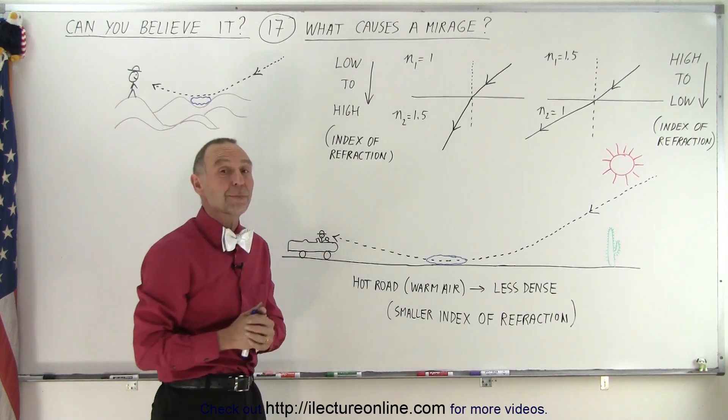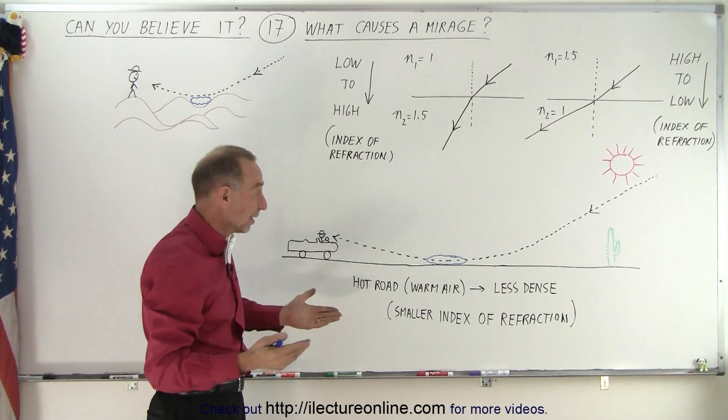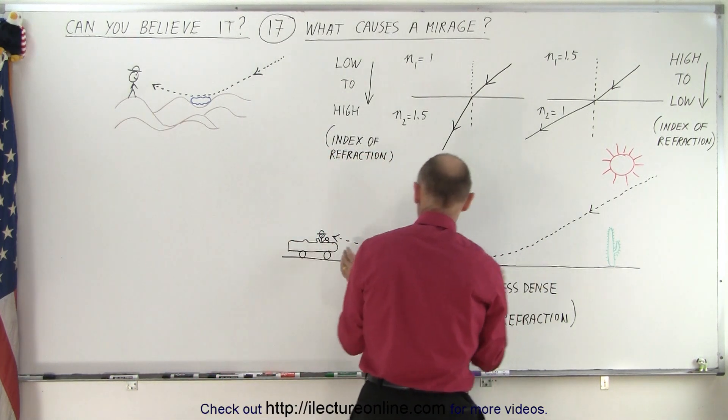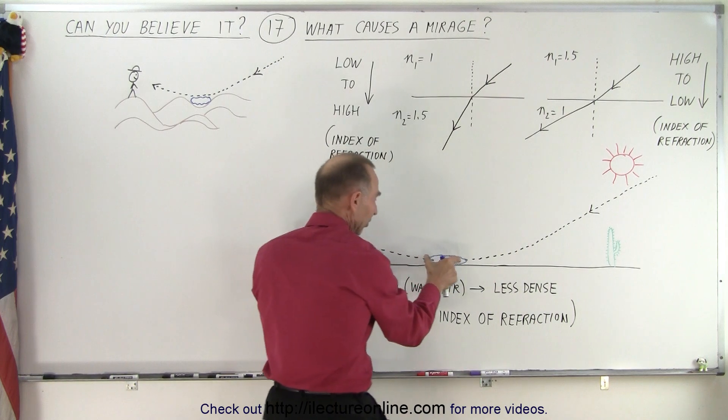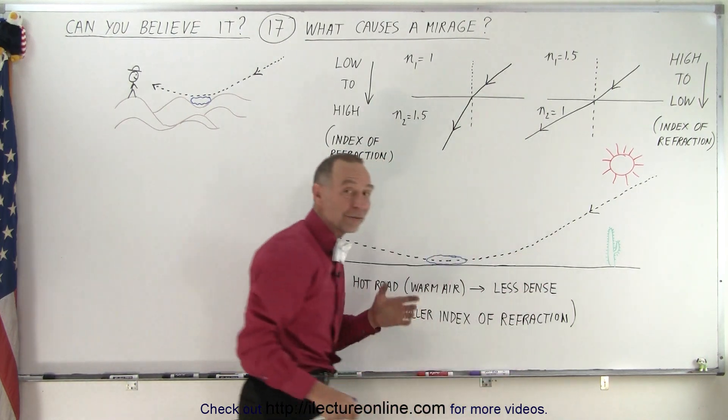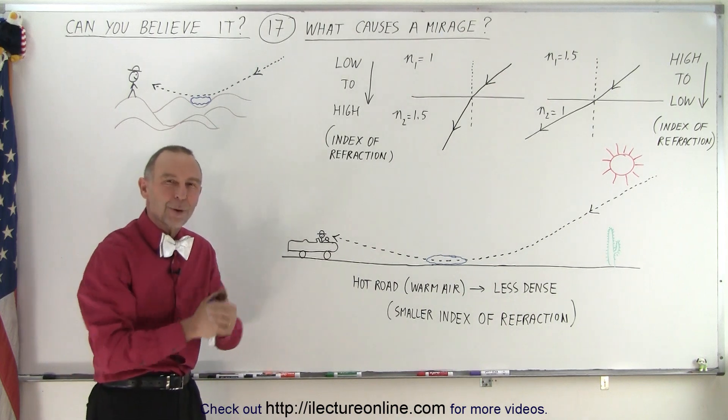That's exactly what a mirage is. And that's why when you try to get closer, it keeps moving away, because this relative angle keeps moving. The car never gets any closer; the position of this will always be about the same distance away from where you are, and you can never quite reach it.